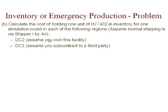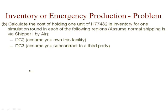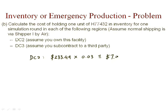For DC2, the inventory holding cost is 3% of the cost of the product because we own this facility. So that value is $233.49 times 3%, which gives you approximately an inventory holding cost of $7. For DC3, it's going to be 5% because it's subcontracted to a third party. Taking the product cost of $233.49 and multiplying by 5%, you get approximately $11.67.